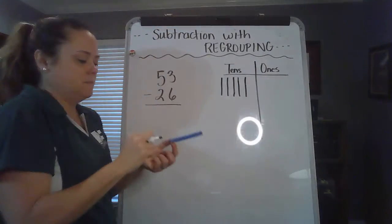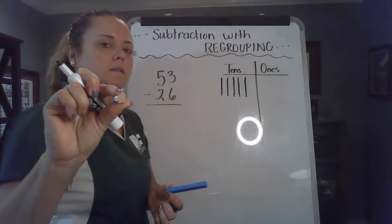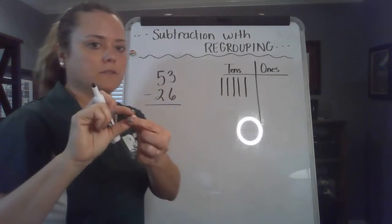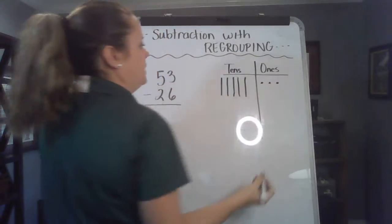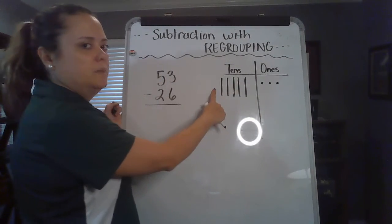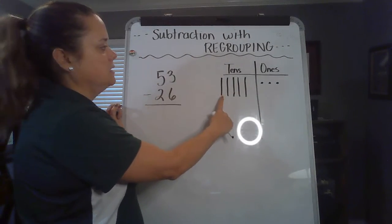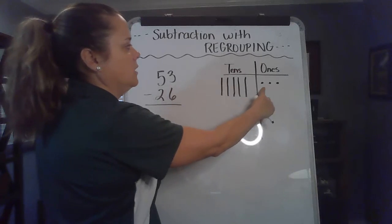And three ones. I'm gonna represent the ones, this little block, with just a dot or little tiny circle. So we have the number 53 represented in base 10 blocks as 10, 20, 30, 40, 50, 51, 52, 53.